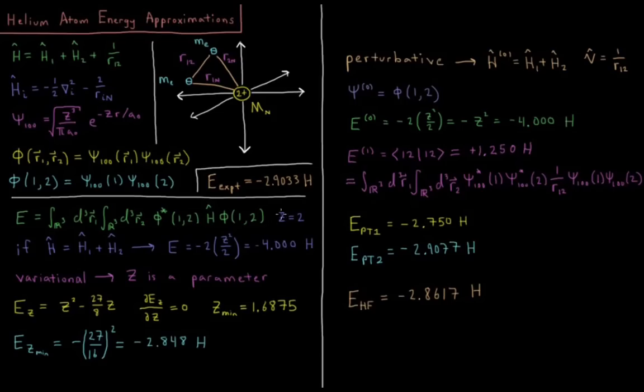So remember, if z equals 2 there, so if we set our Hamiltonian just equal to h1 and h2, and we ignore the repulsion of the electrons from one another, we get an energy which is negative 2 times z squared over 2, or negative 4 Hartrees. So if we just say that they're going to go in the 1s orbital, they're not going to repel each other, we get an energy of 4 Hartrees, which is much lower than the actual value. That makes sense because this is a repulsion, so a repulsion should increase our energy and push us back up closer to this experimental value.